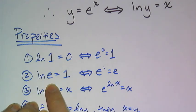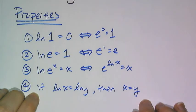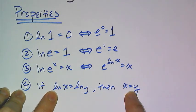The natural log of e to the x is going to be x and e raised to the natural log of x is going to be x because they undo each other. And then the uniqueness property - if the natural log of x equals the natural log of y, then x equals y.